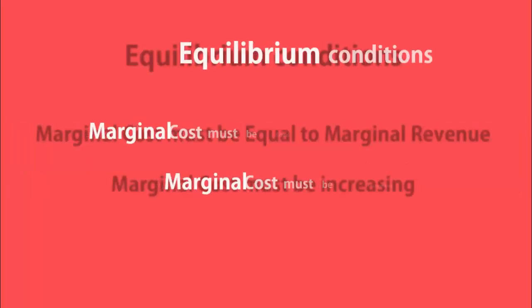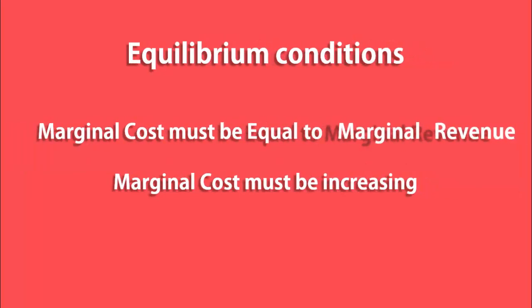According to this approach, for the firm to be in equilibrium, two conditions are to be satisfied. Marginal cost must be equal to marginal revenue. Marginal cost must be increasing.